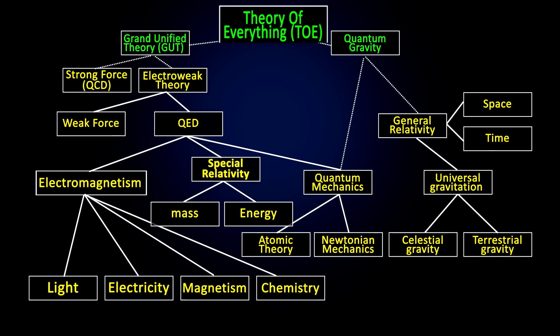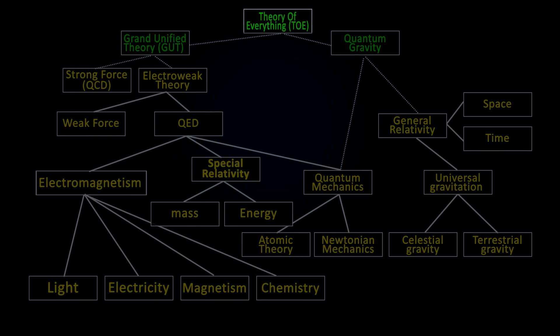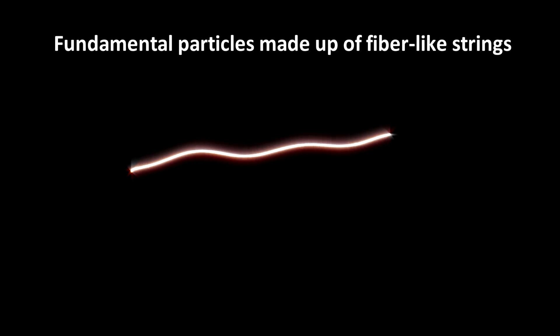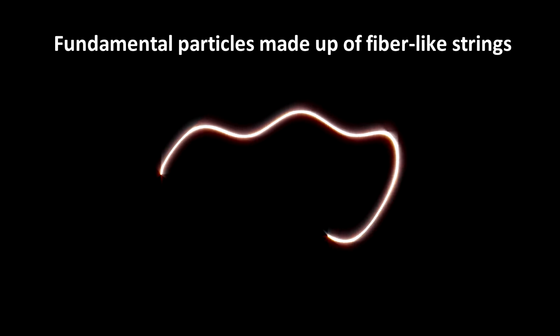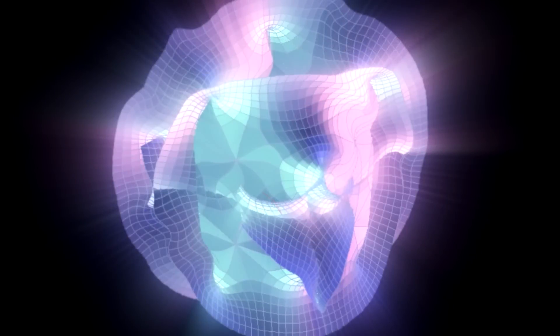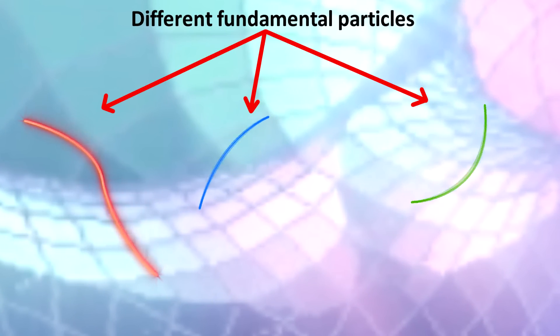So are there any good candidates for a theory of everything? The most popular is string theory, which posits that all particles are fundamentally different vibrations of a single entity. String-like objects. The vibrations of these objects in six to seven hidden dimensions is what we perceive as the various fundamental particles and force carriers of nature.